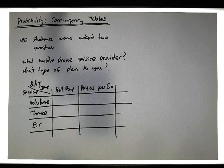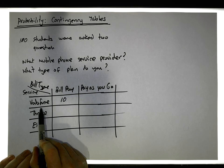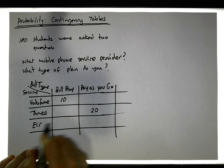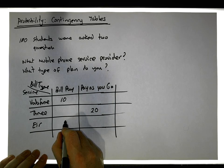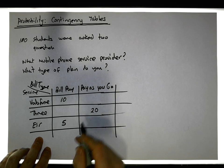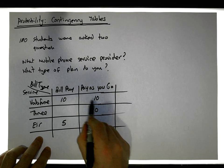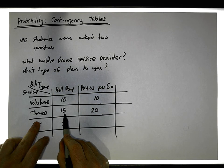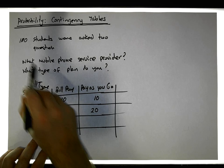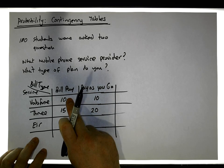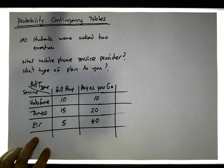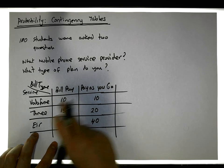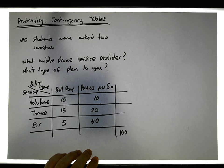Let's say 10 respondents said they're with Vodafone and they're bill pay, 20 said they're with Three and pay as you go, 5 said they're with Eir and bill pay, 10 were with Vodafone and pay as you go, and 15 were Three customers who are bill pay. That gives us 60 so far, so let's say 40 students are with Eir on pay as you go, giving us a total of 100 students.